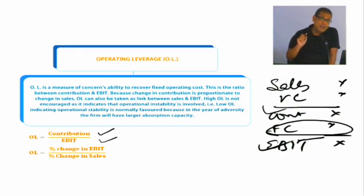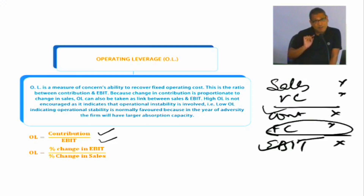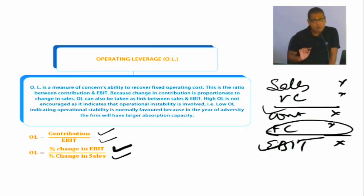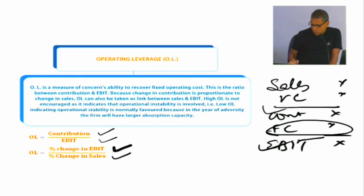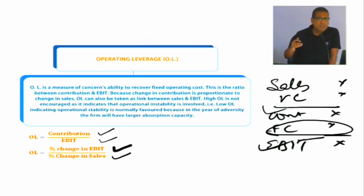लेकिन अगर high operating leverage है, तो आप उसका second वाला formula देखिए — percentage change in EBIT divided by percentage change in sales — same operating leverage का ही formula है। अब यहाँ पे आप देखो, अगर किसी का operating leverage high है — anything beyond 3 or 4 is high.